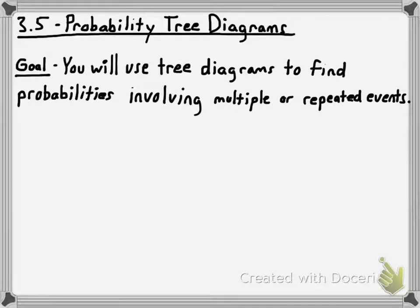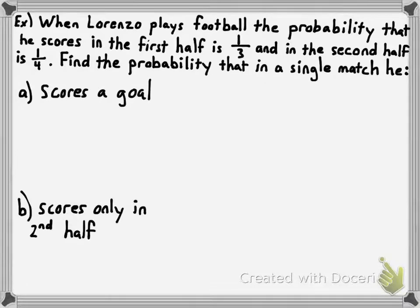In this video we're going to talk about how to use probability tree diagrams to find probabilities involving multiple events or repeated events. We've looked at Venn diagrams and sample space diagrams, but this will focus on multiple events — like tossing a coin and rolling a die — or repeated events like drawing a card from a deck with replacement. Tree diagrams are one of my favorite ways of solving probability problems.